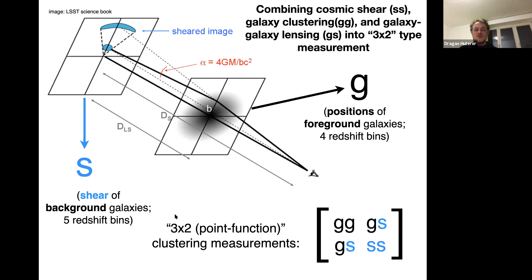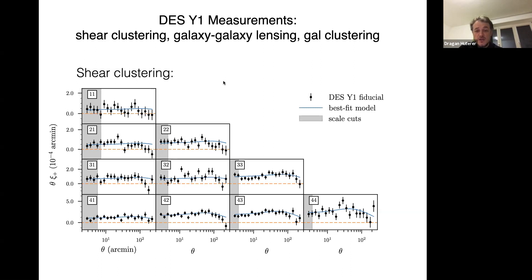Combining all three is called 3×2 correlation — a concept that's only a few years old. People talk about 3×2 because there are three two-point correlation functions: GG, GS, and SS. If you have multiple redshift bins and angle bins, this becomes a large matrix where each element is a measurement. This is now the main thing that DES is doing, KiDS is doing, and that future surveys will be doing. You can also count galaxies, look at voids, search for non-Gaussianity, but 3×2 is the main approach.